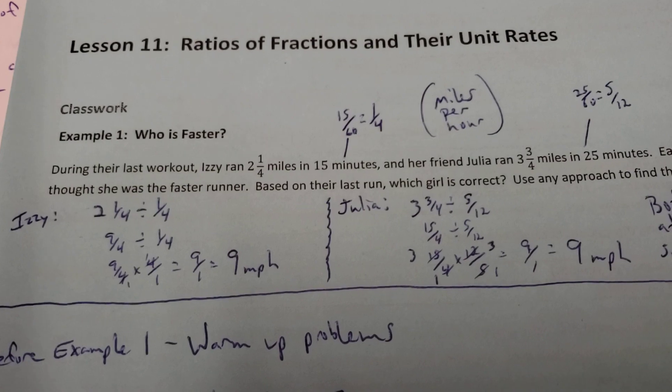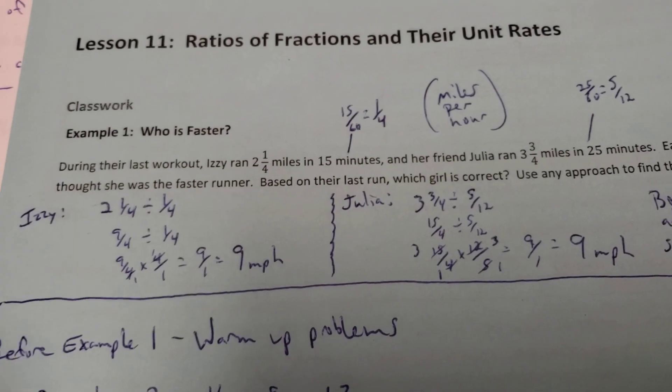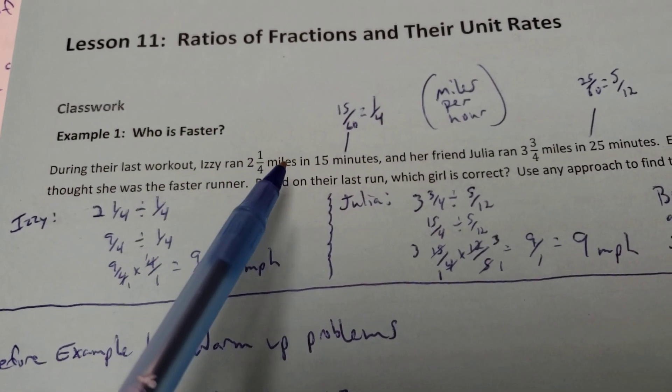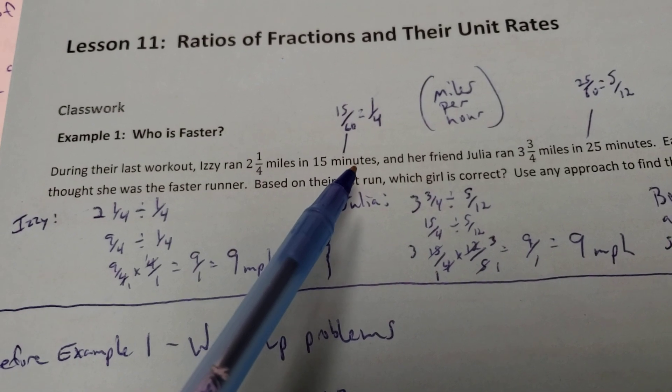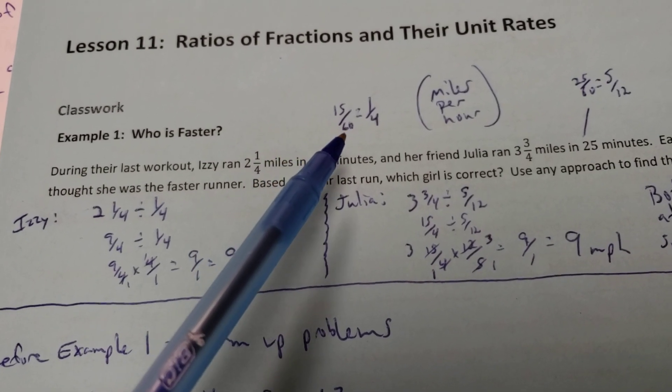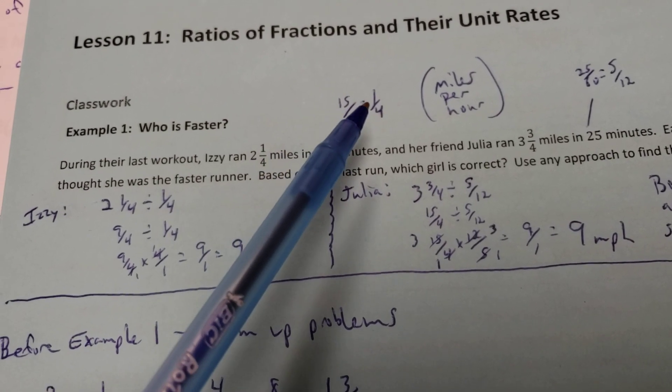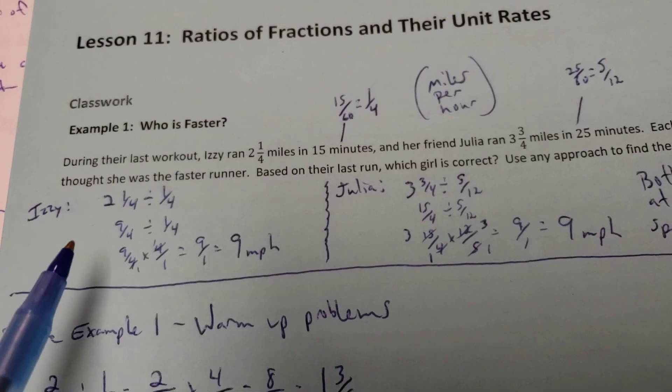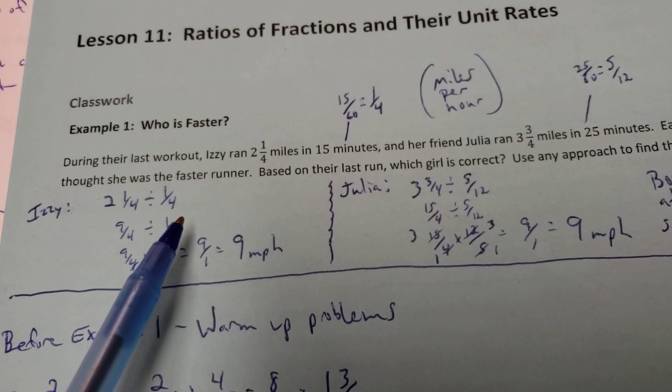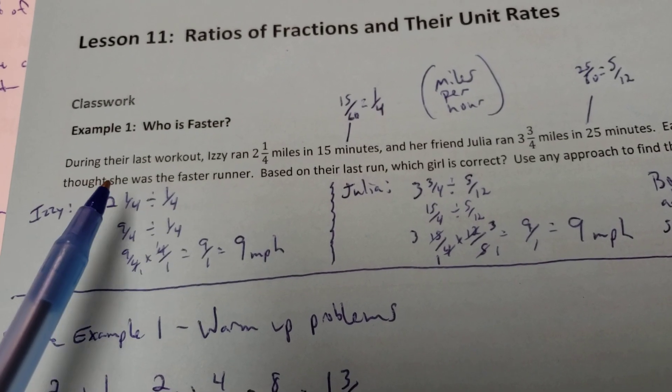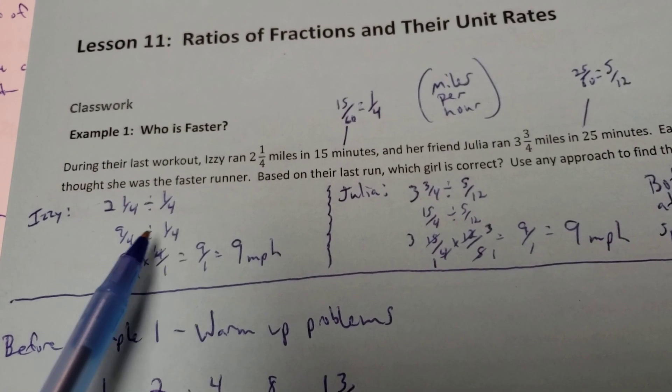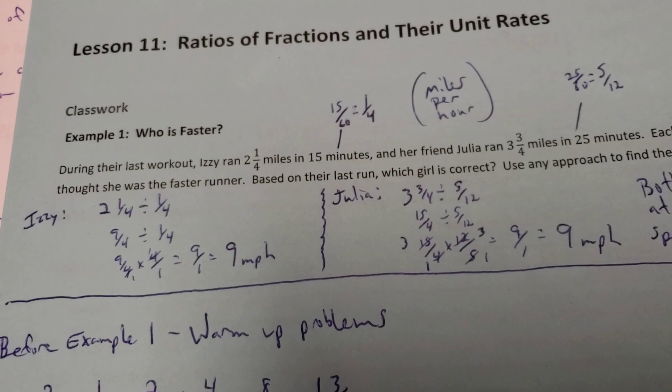Now normally we're trying to find like speed of something. We get like miles per hour. Well, I got the miles, but this is not hours. It's in minutes. But 15 minutes out of 60, 60 is an hour, 15 out of 60 is 1/4 of an hour. So what I'll do is I'll take 2 1/4 divided by 1/4. Make it improper. Then I can keep, change, flip, and then do my work, and I get 9 miles per hour.